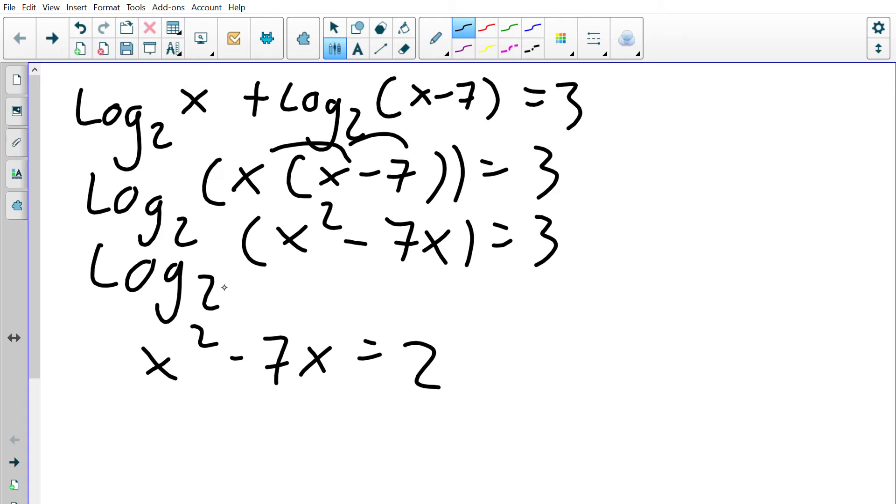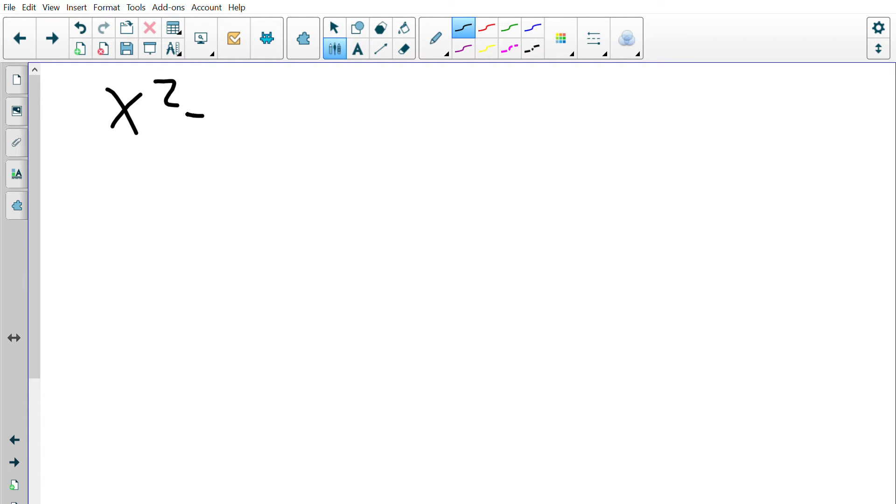So this would be x squared minus 7x is equal to 8. And then from there I would subtract 8 to the other side so that it's set equal to 0. I would plug into my quadratic formula or see if I could factor, and then I'd set each one equal to 0.